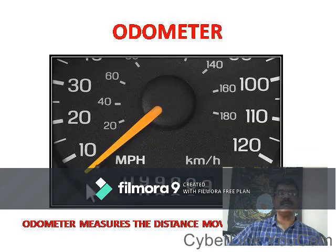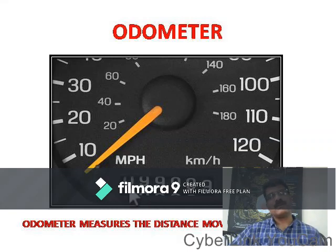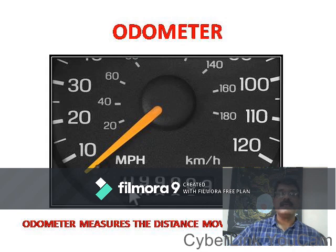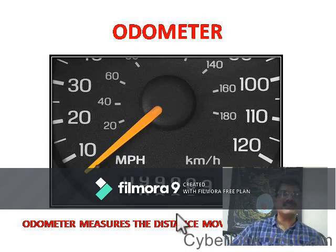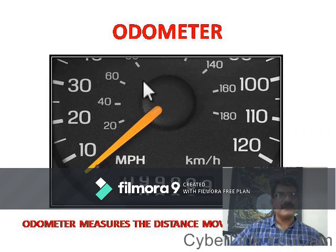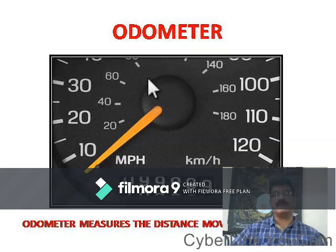Along with the speedometer in the dashboard of a car or vehicle, you can also see the odometer, also called the auto meter. The auto meter is a device which shows the distance traveled or covered by a vehicle. If you note the odometer reading at the start of a journey and again at the destination, subtracting the initial reading from the final reading gives you the distance covered.